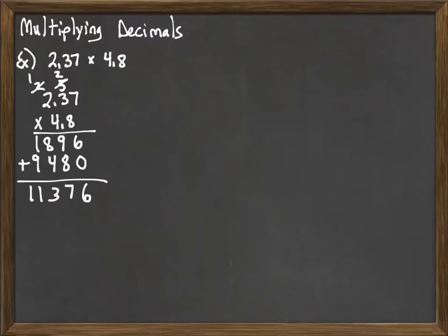Now the final step when we're multiplying decimals is to count up our decimal places. As you look at what we have here, we have two decimal places in the first number, one decimal place in the second. So we put those together, it gives us three total decimal places.